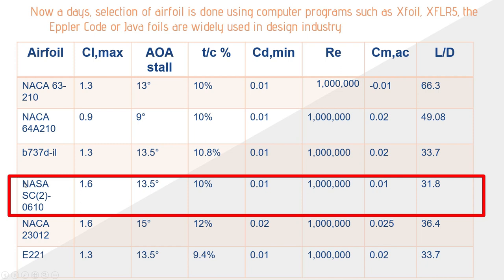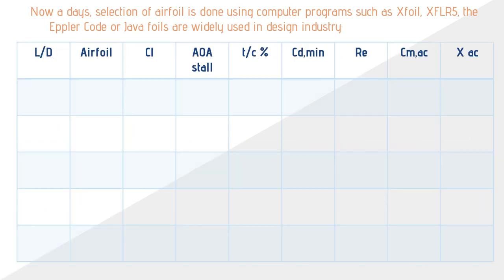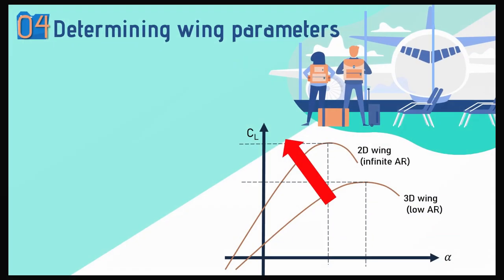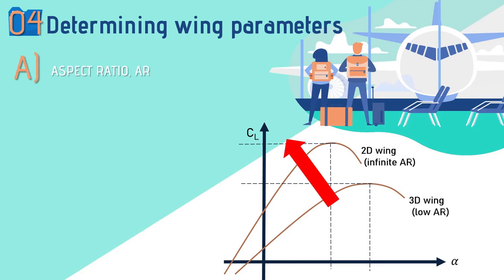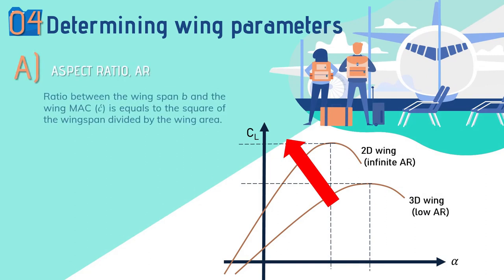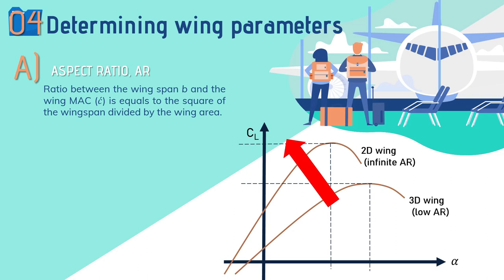Nowadays, airfoil selection is done using computer programs such as XFOIL and XFLR5, which are widely used in the design industry. You can also modify your tabular column accordingly and find the L/D ratio to satisfy other criteria. Moving to aspect ratio: it is the ratio of span squared to wing area.